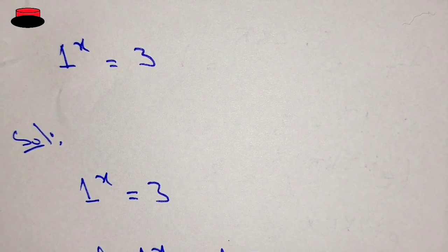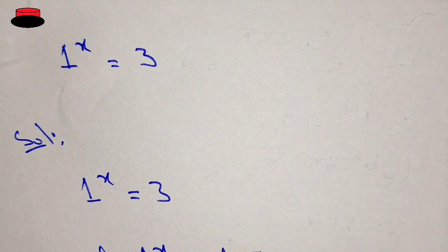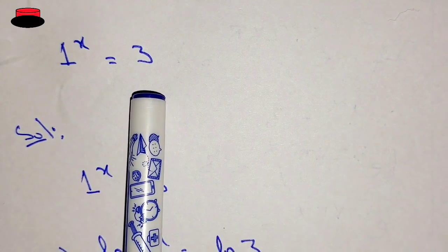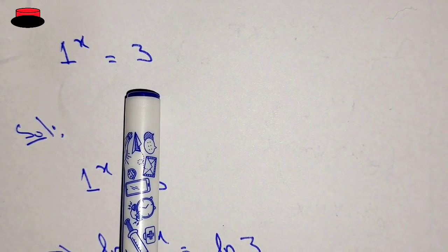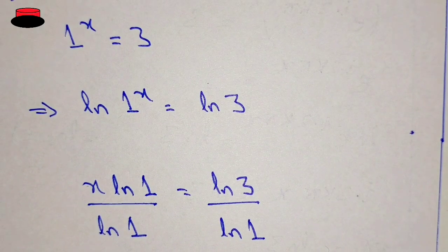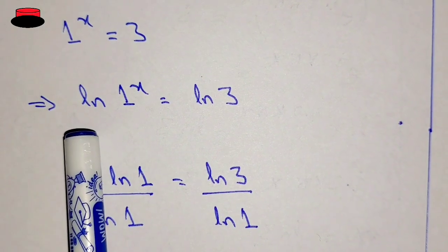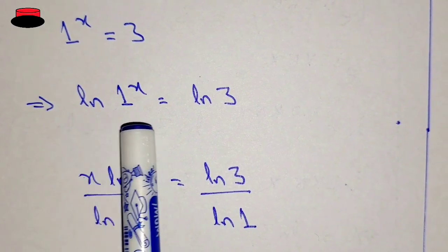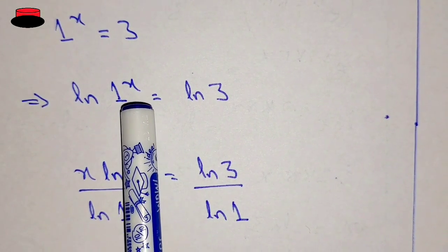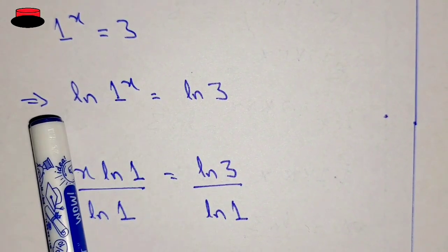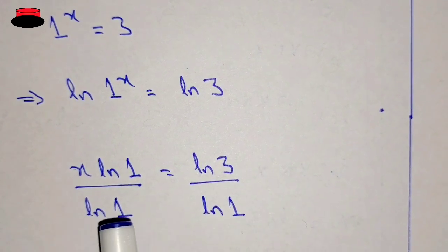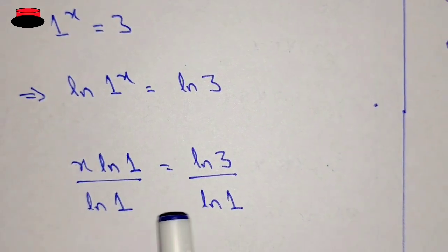Hello, welcome to the new video. In this video we have the question 1 power x equal to 3 and we have to find out the value of x. In the first step we will multiply by ln on both sides, so it will be ln(1^x) equal to ln(3). Now using the logarithm property, x times ln(1) equal to ln(3), so dividing both sides by ln(1).